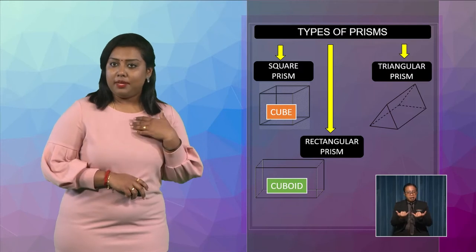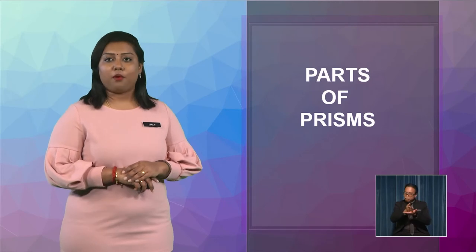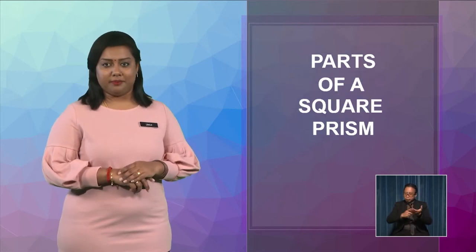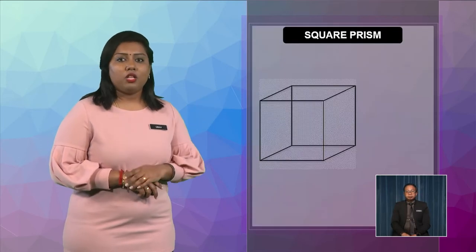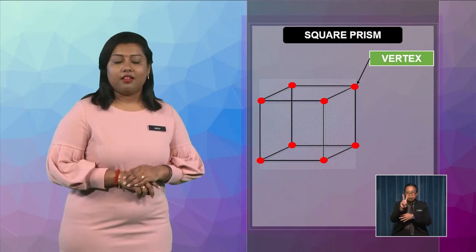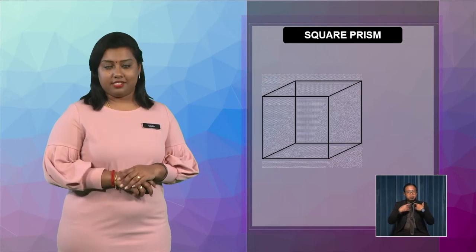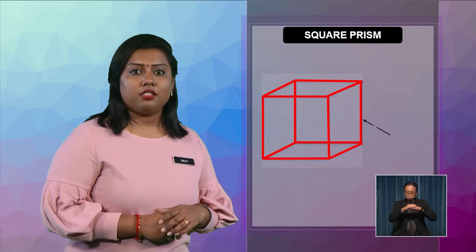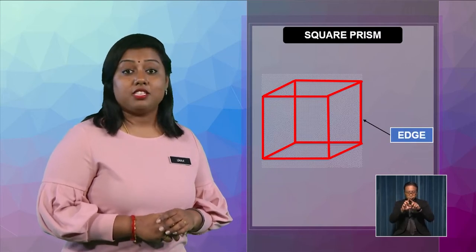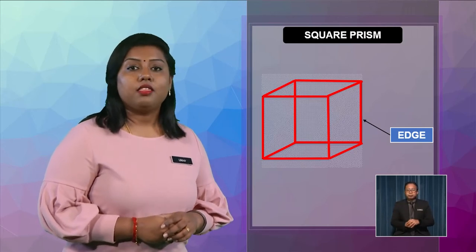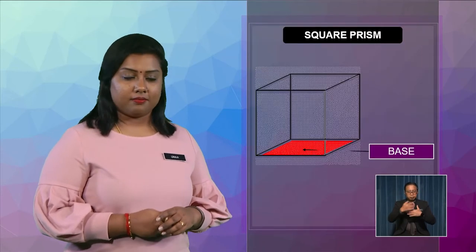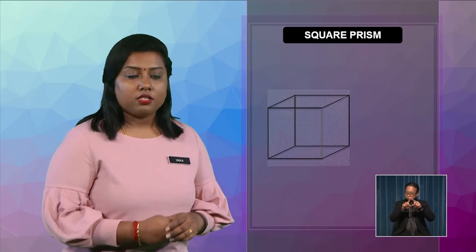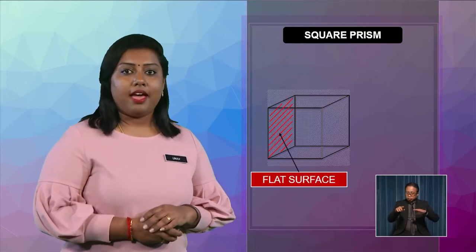Now let me explain in more detail the parts of each type of prism. First, let's look at the parts of a square prism. The red dot on the square prism is called a vertex, and a square prism has 8 vertices. The line on the side as shown on the screen is called an edge, and a square prism has 12 edges. The part shaded in red is called the base. Besides the base, the other parts are called flat surfaces, and a square prism has 6 flat surfaces.